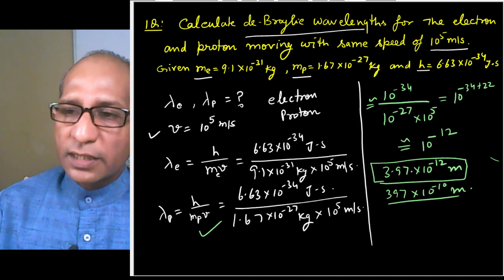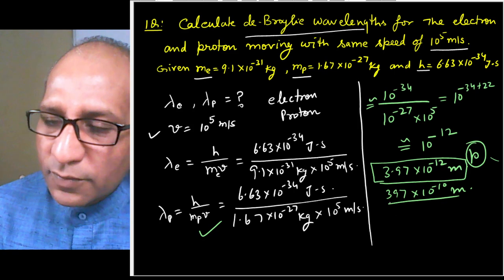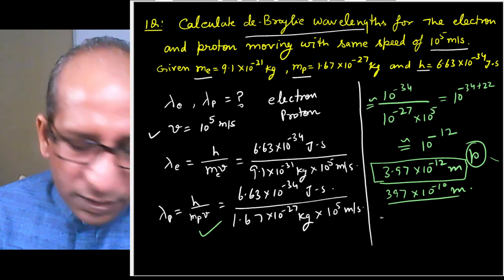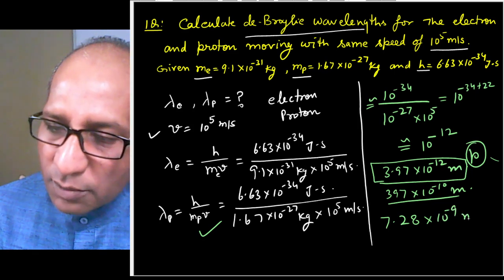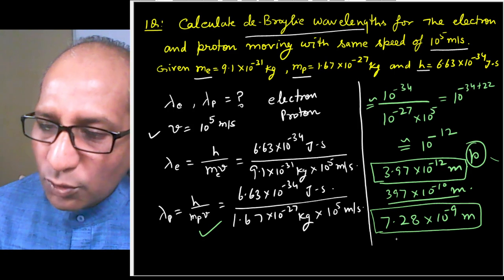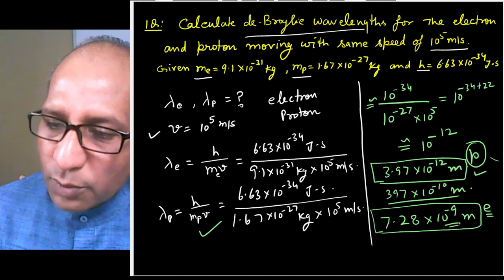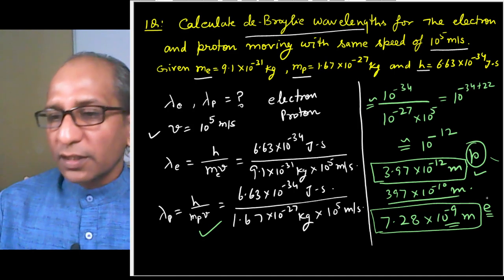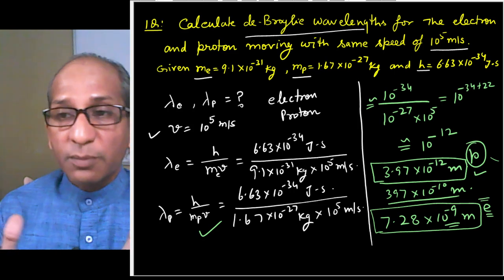Comparing results: λ_e ≈ 7.2×10⁻⁹ m and λ_p ≈ 3.97×10⁻¹² m. The electron's wavelength is much larger than the proton's. The electron's wavelength (∼10⁻⁹–10⁻¹⁰ m) is comparable to the size of an atom (∼10⁻¹⁰ m), confirming electrons are associated with atomic structure.